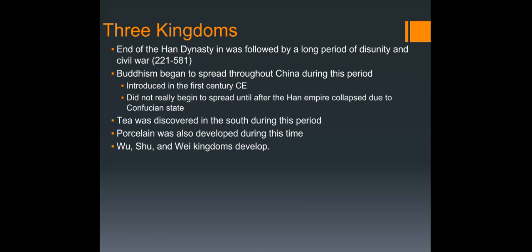By 600 there were three different types of Buddhist monasteries in China. Also during this time period, tea was discovered in the south and porcelain was developed — two things that China will become very well known for. The Three Kingdoms that develop are the Wu, the Shu, and the Wei.